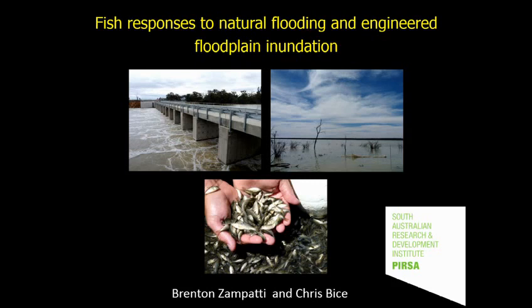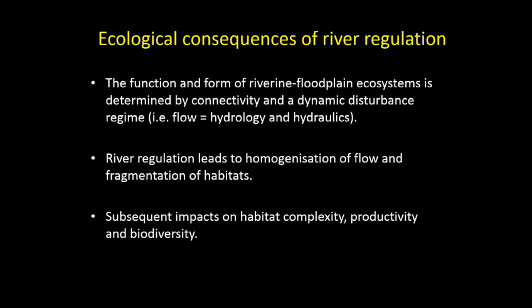Before I get stuck into the data, it's worth setting the ecological context for this study as well as the management and geographical context. Going back to Freshwater Ecology 101, I want to talk about how River Rhine floodplain ecosystems function. The processes and patterns we see in these ecosystems are determined by two main things: connectivity and the flow regime. The flow regime creates disturbance and diversity. In a regulated river we simplify the flow regime and fragment the river — we put weirs or dams on rivers or extract water — which decreases habitat complexity, productivity, and ultimately biodiversity.